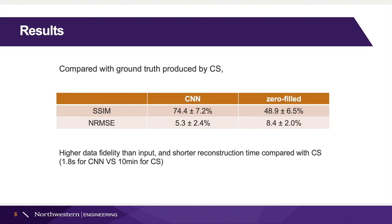On the other hand, CNN takes only 1.8 seconds, while compressed sensing takes 10 minutes to generate a figure, which means that deep learning significantly reduces reconstruction time.